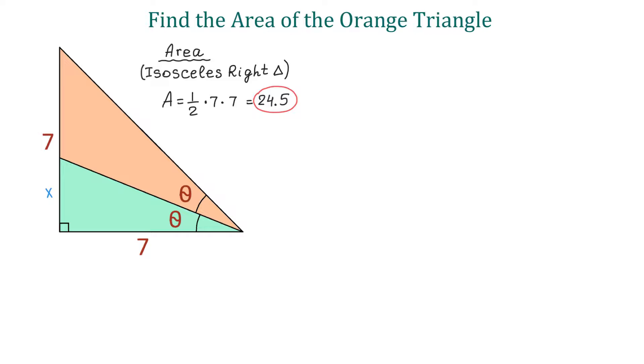We know that in an isosceles right triangle, this angle is 45 degrees and this angle is also 45 degrees. Then, because these two angles are equal, each one will be half of 45 degrees, which is 22.5 degrees.